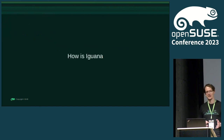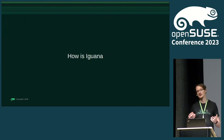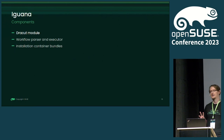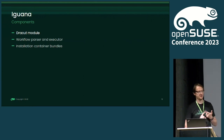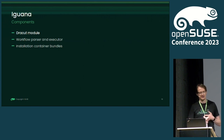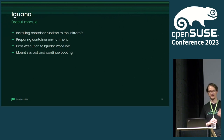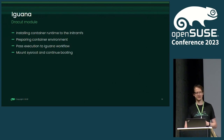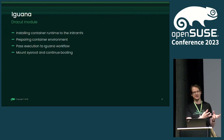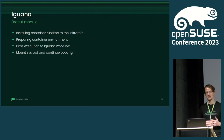So, how we implemented it and what is the current state of implementation. Iguana is made of a couple of different components. First, we have a Dracut module. Then we have something which understands some description of what container should be downloaded and how it should be used. And the last thing, we have the actual installation containers. The Dracut module — whoever touches Dracut knows it has different hooks. So Iguana is basically a pre-mount hook. Everything is running just before mounting a root filesystem and switching over to it.